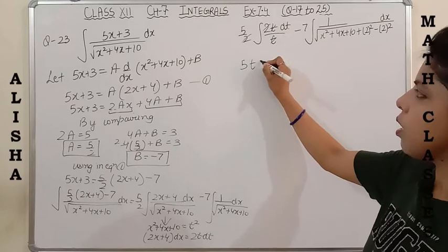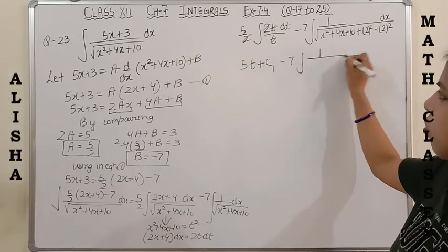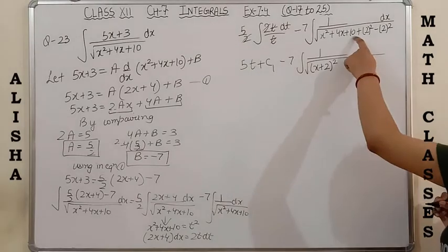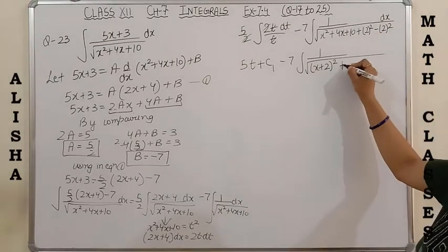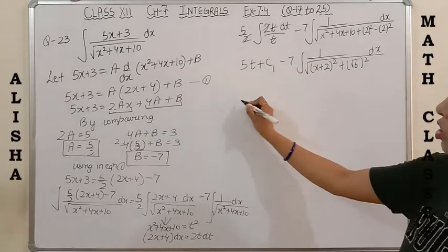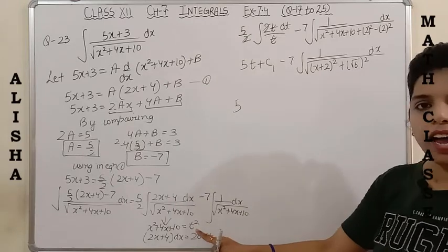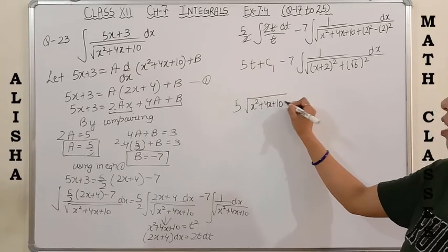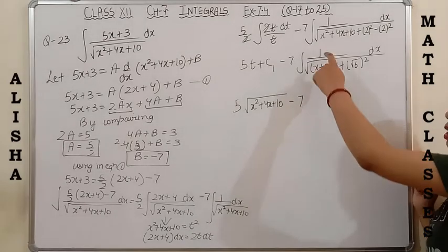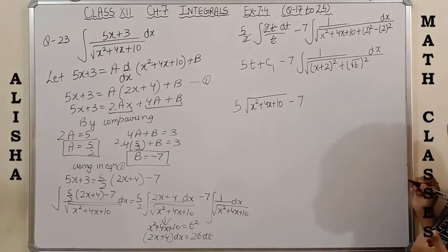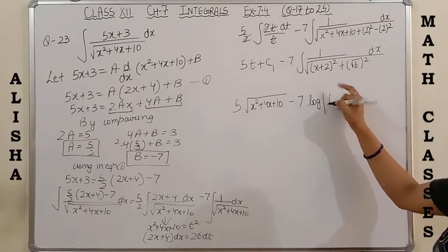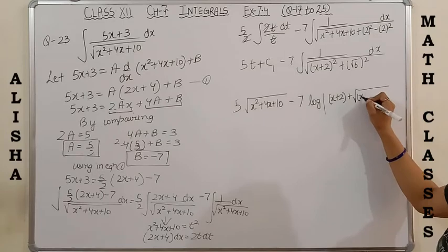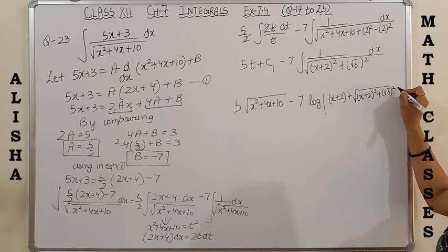So the second integral becomes -7 times integration of 1 upon √[(x+2)² + (√6)²] dx, since 10-4 = 6 = (√6)². Now substituting back t = √(x²+4x+10). The formula for 1 upon √(x²+a²) is log|x + √(x²+a²)|, so here with x replaced by x+2 and a = √6.